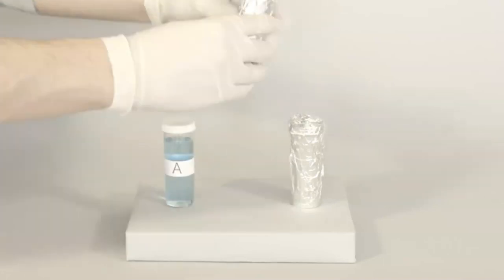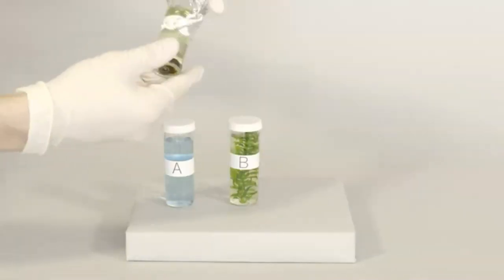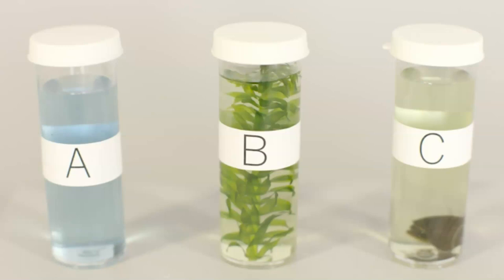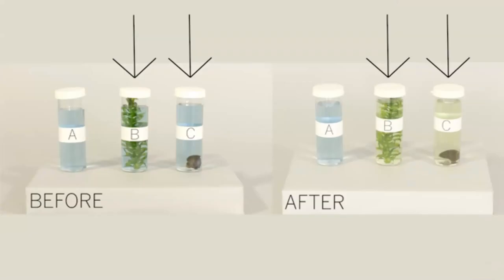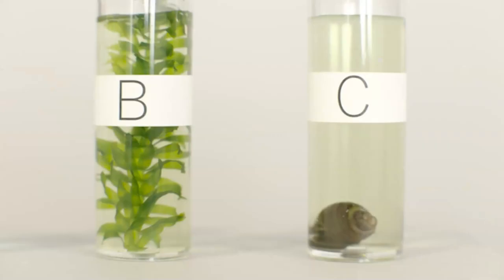It's been 12 hours, so let's unwrap the vials to see what happened. It looks like vial A, the control, is unchanged, which we expected. Vials B and C, with the plant and the snail, have changed color. First they were blue, and now they're yellow. This means that both producers and consumers give off carbon dioxide.